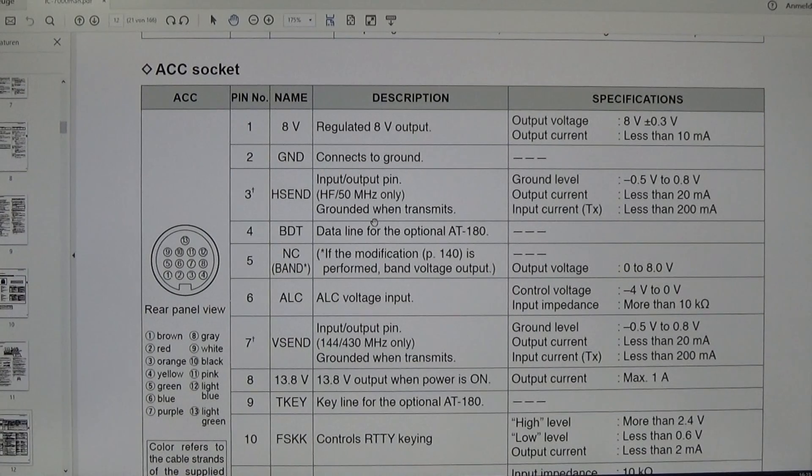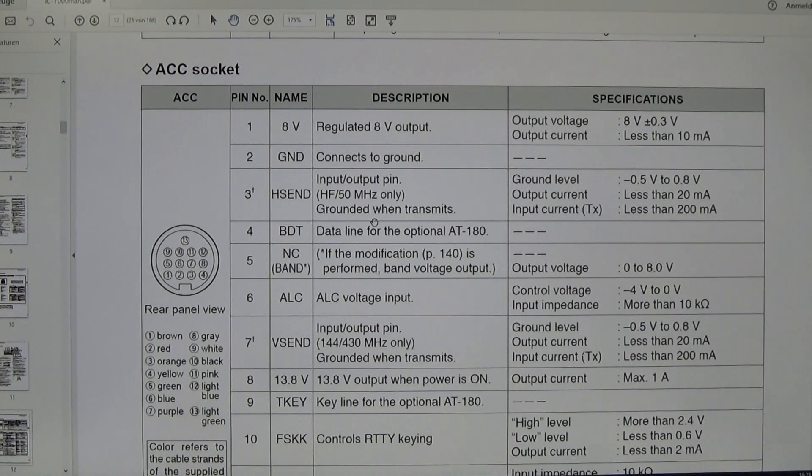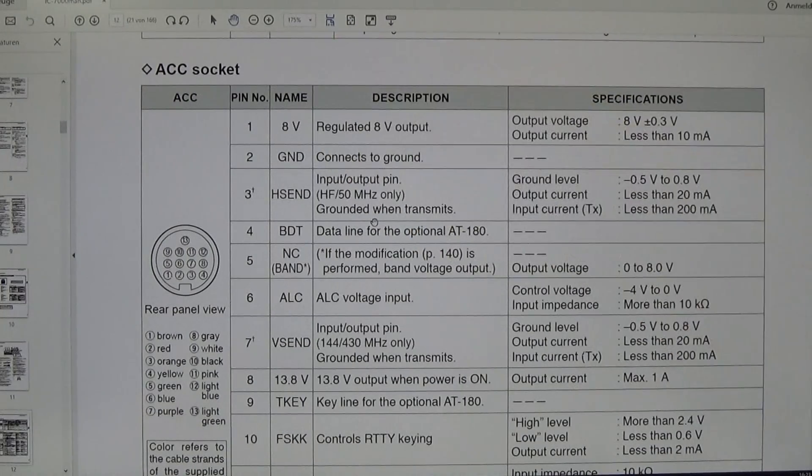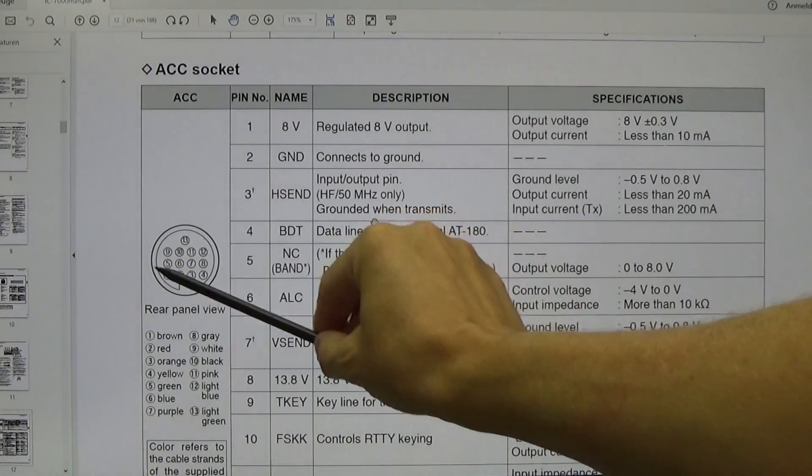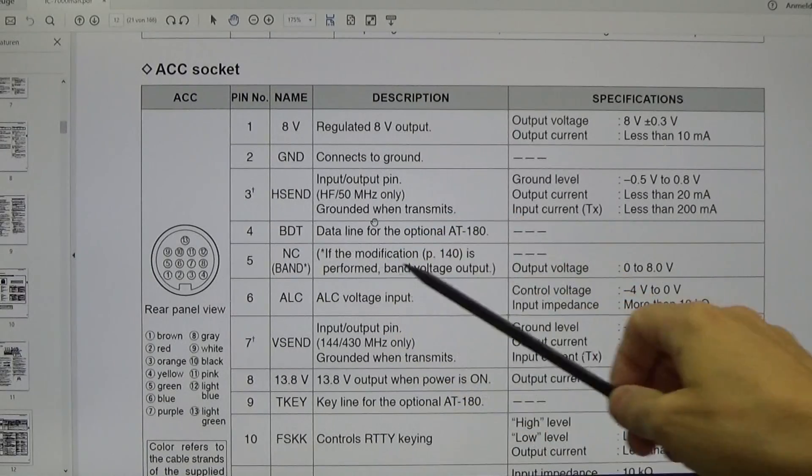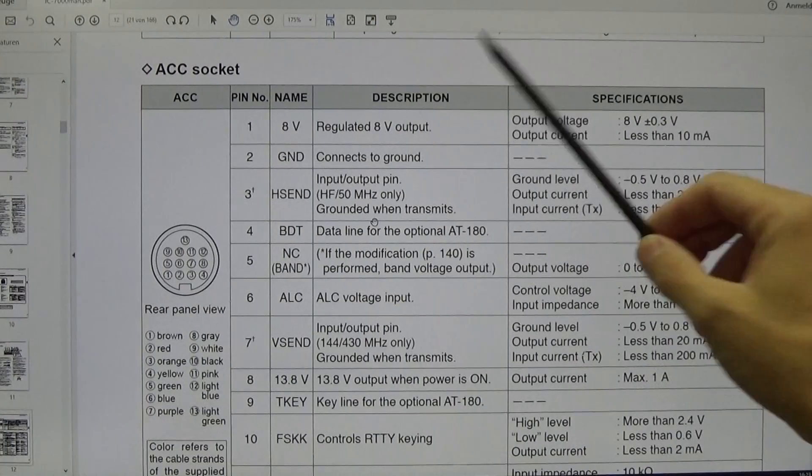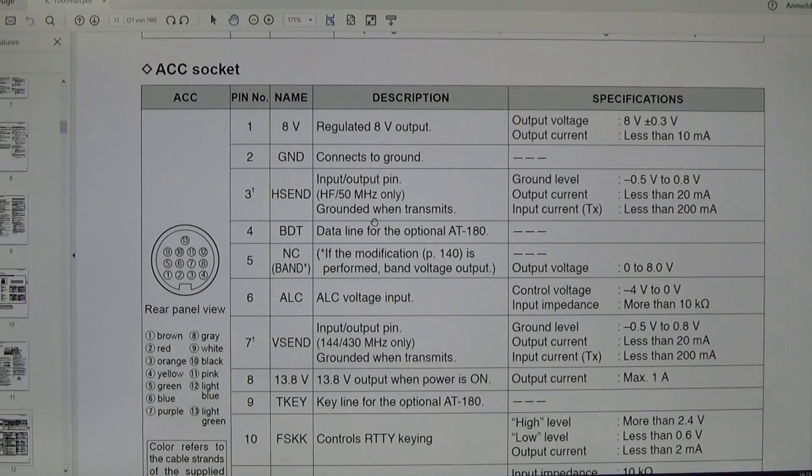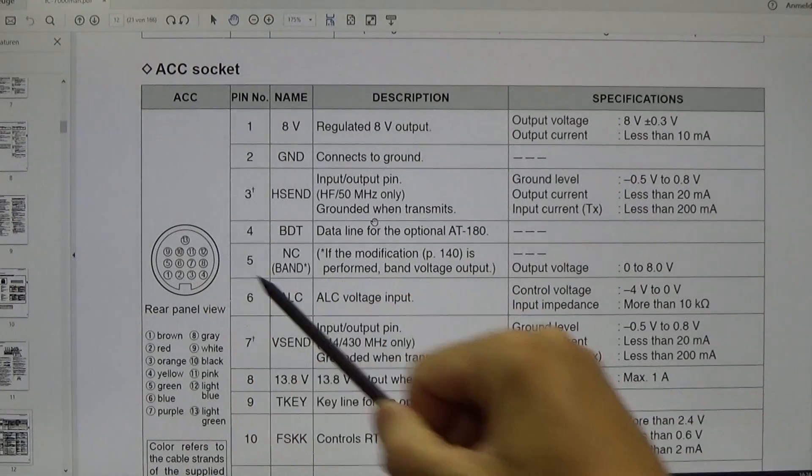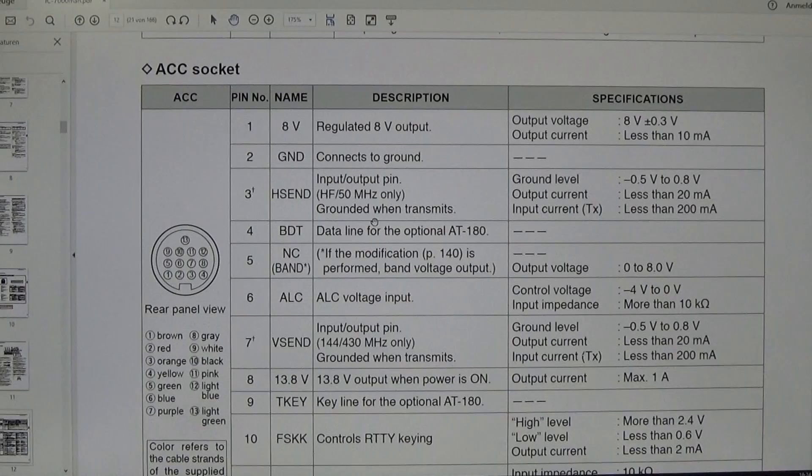A short look in our manual will tell us what is present at the ACC socket. We see here at pin 3 that pin 3 will be grounded when transmit, and that is our port of interest. So let's see if pin 3 goes to ground when we put the radio to transmit.